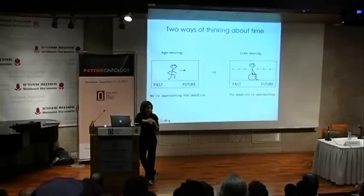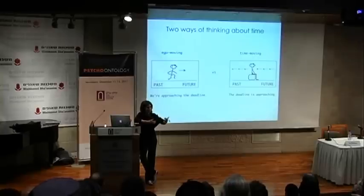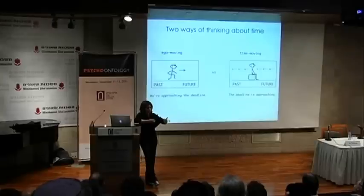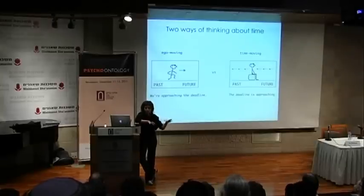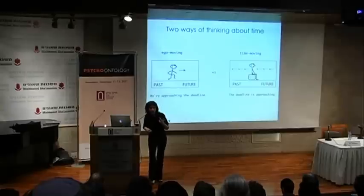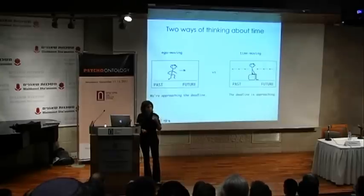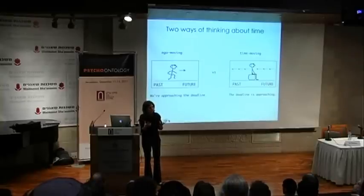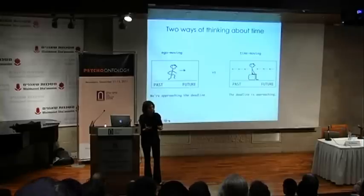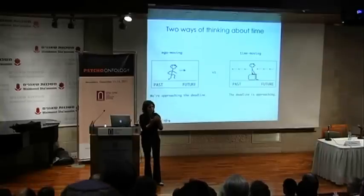If time is a unidirectional, unidimensional entity, it shouldn't matter whether you're approaching the deadline or the deadline is approaching you, because there's no fixed ground against which we're moving. In space it matters — if I'm approaching you versus you approaching me, we can distinguish those two cases. But 'me approaching the deadline' versus 'the deadline approaching me' shouldn't be different. But if people are really thinking about time in spatial terms, perhaps they've imported extra dimensionality, treating these two scenarios as conceptually different.